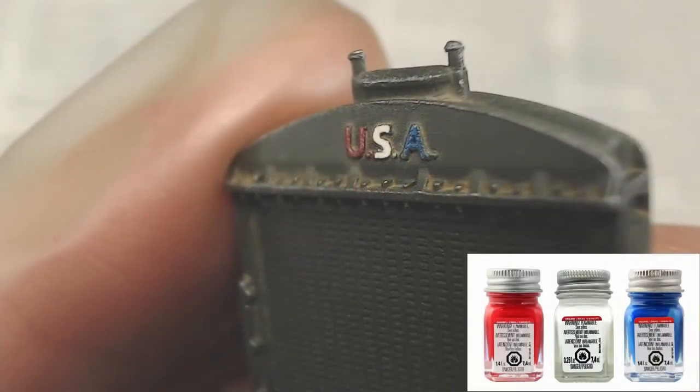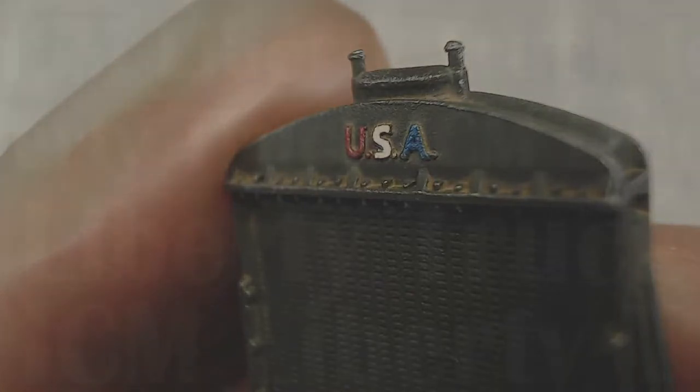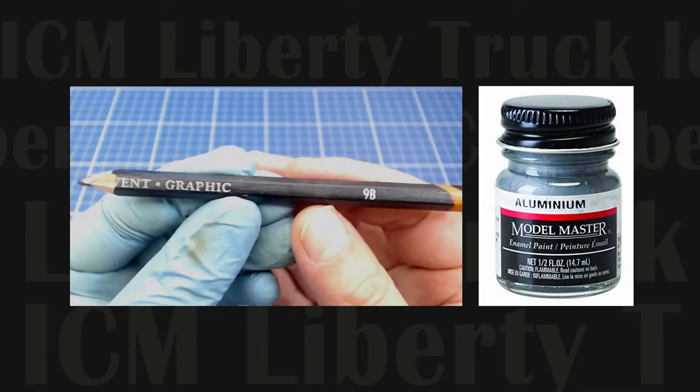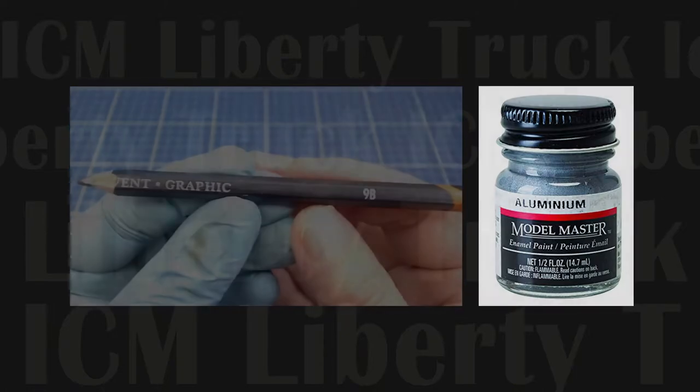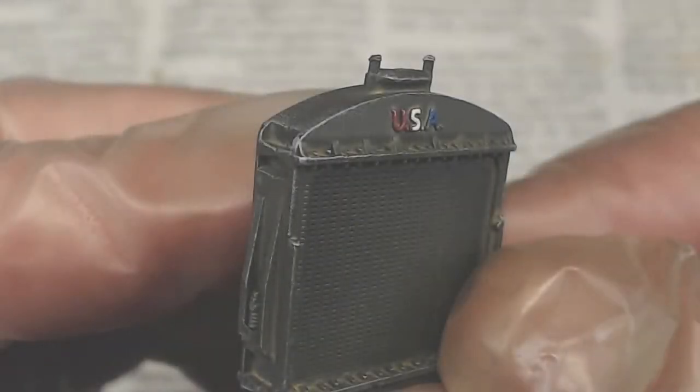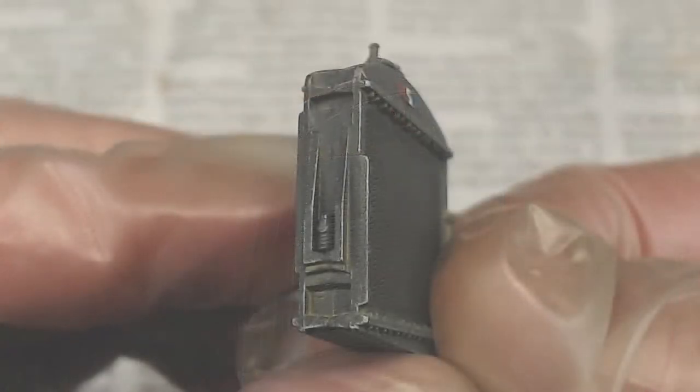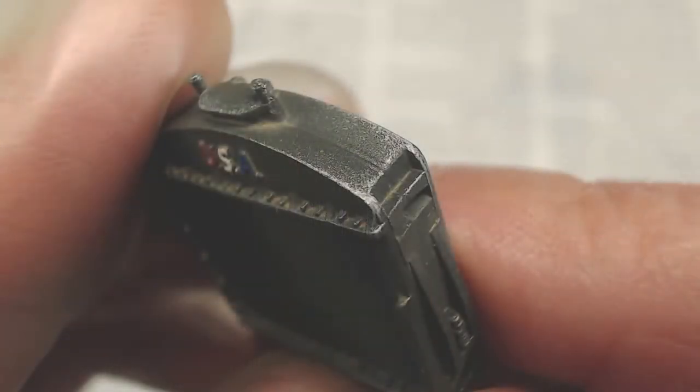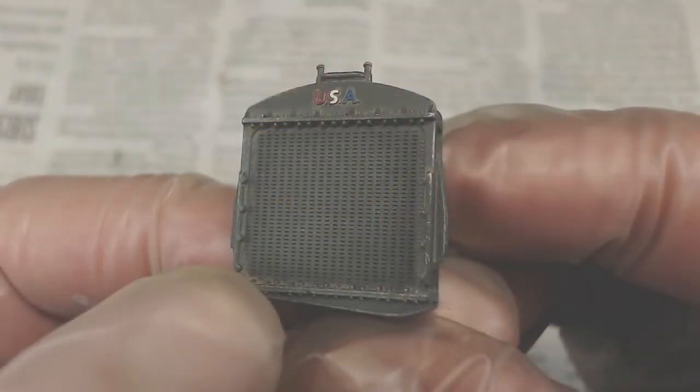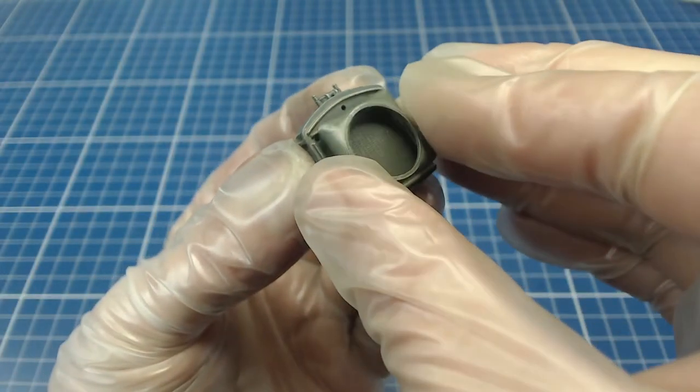Here I used red, white and blue testers enamels painted on with a fine detail brush. I like to use a soft 9b pencil and a little model master aluminum enamel for detailing metal parts. We can rub the radiators edges with our pencil and dry brush with our aluminum enamel. I also painted the radiator grill with a black wash to give it some contrast. We finish assembling the radiator.